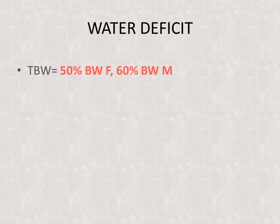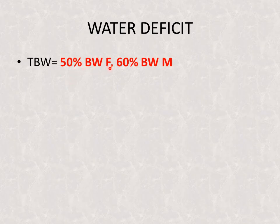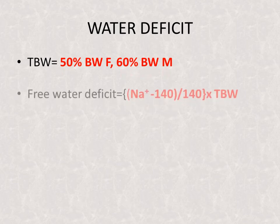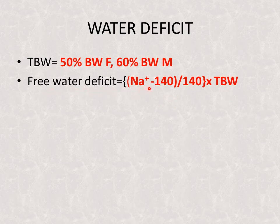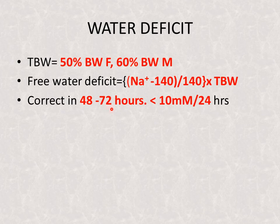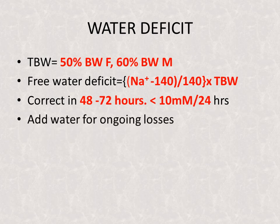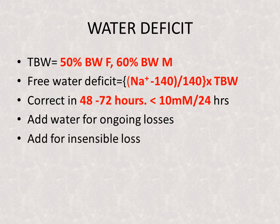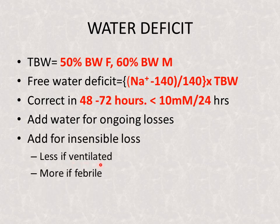Calculate the water deficit: total body water in females is 50% of body weight and in males approximately 60% of body weight. Free water deficit = (sodium − 140) ÷ 140 × TBW. This deficit has to be replenished over 48 to 72 hours, targeting a correction of less than 10 mmol per 24 hours. Ongoing losses and insensible losses must also be accounted for — less if ventilated, more if febrile.